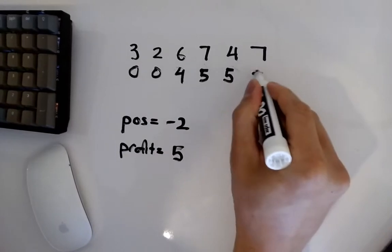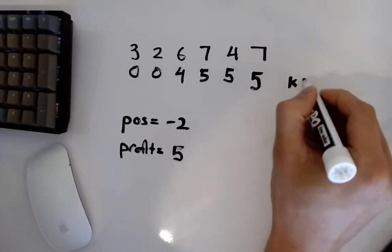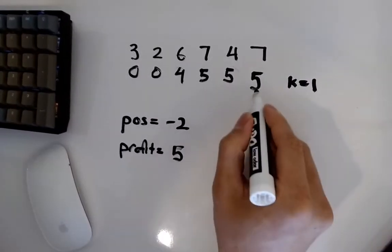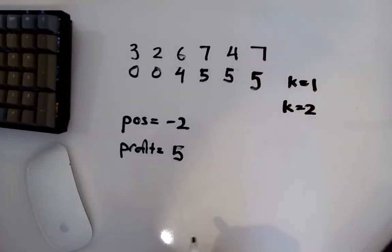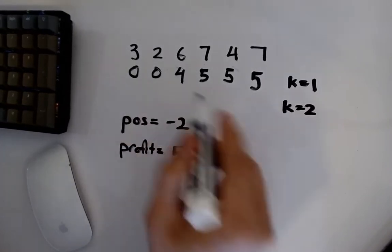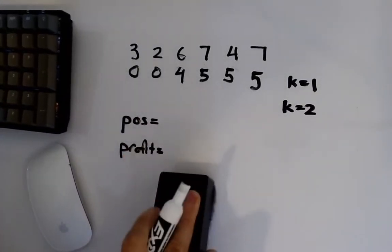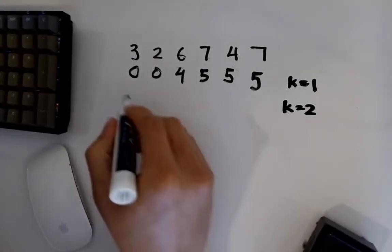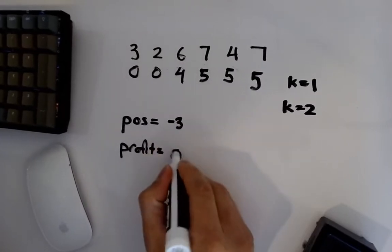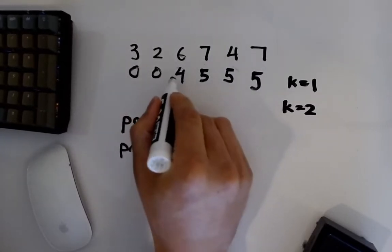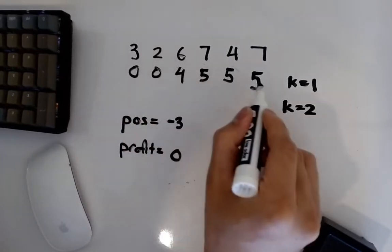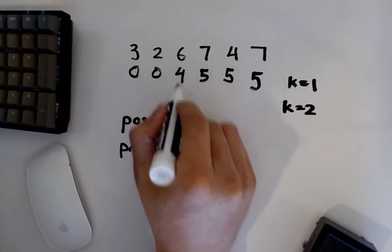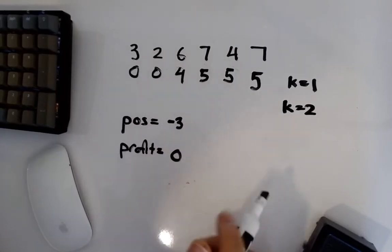We can see with one transaction here, k equaling 1, our max profit is going to be 5. So what we do is when we take k equals 2, we basically do the same thing, but we restart everything with our positions being negative 3 and profit is 0. But now we're going to take the amount of profit we could have made with one transaction and calculate what's our best position going to be after that.